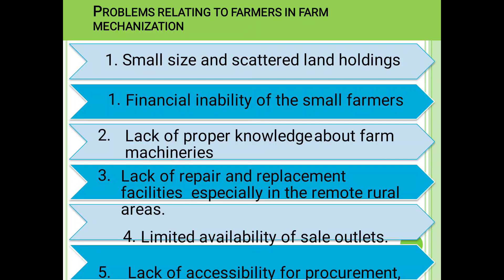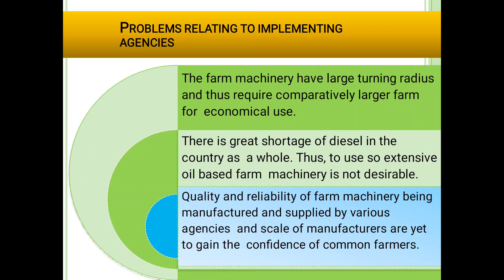Problems relating to farmers in farm mechanization: 1. Small size and scattered landholding. 2. Financing inability of small farmers. Lack of proper knowledge of farm machinery. Lack of repair and replacement facilities specially in remote rural areas. Limited availability of sale outlets. Lack of accessibility for procurement. Problems related to implementing agencies: farm machinery has large turning radius and thus requires comparatively larger farms for economical use. There is a great shortage of diesel in the country as a whole, thus extensive use of oil-based farm machinery is not desirable. Quality and reliability of farm machinery being manufactured and supplied by various agencies and small-scale manufacturers are yet to gain the confidence of common farmers.